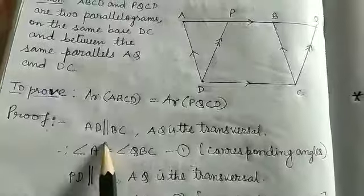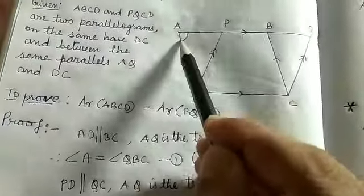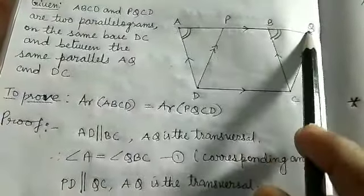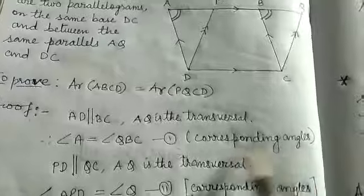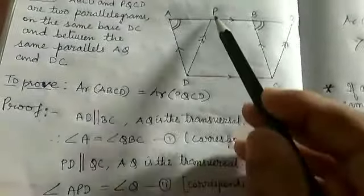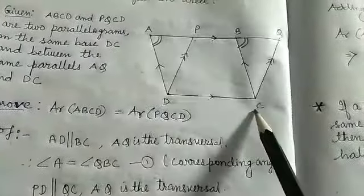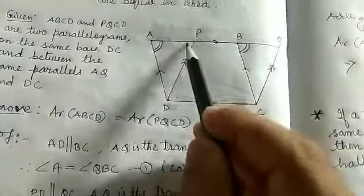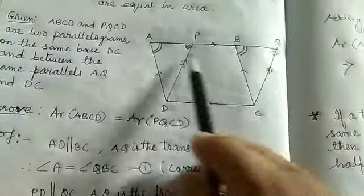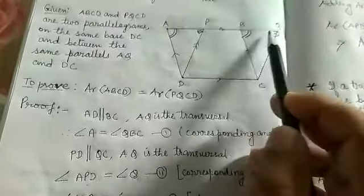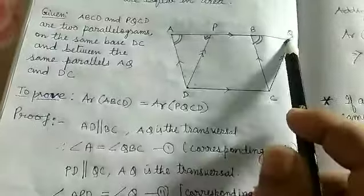Proof: Since AD is parallel to BC and AQ is a transversal, the corresponding angles are equal — angle A equals angle QBC. That is number one. Similarly, PD and QC are parallel and AQ is a transversal, therefore angle APD is equal to angle Q.